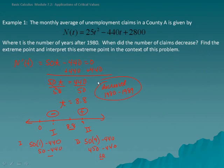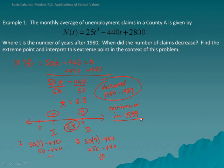The extreme point is 8.8. Because the derivative goes from negative to positive, this is a minimum — occurring in 1989. That represents the minimum number of unemployment claims. After this point, the claims begin to increase, so County A had a minimum number of claims in 1989.